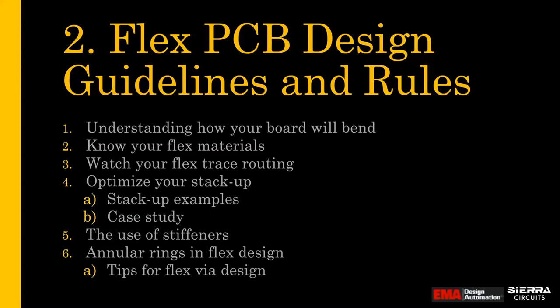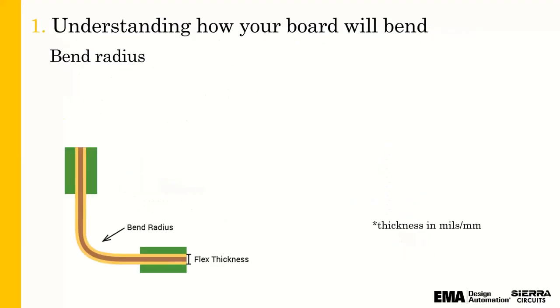Key points for a good understanding of FLEX include knowing how the board will bend, understanding the materials, and how you route — which Janine will cover later. Bend radius is super important. It's the minimum amount of bend you can deal with, so you need to understand how many copper layers you have in your FLEX region that will bend. You should be able to calculate your bend radius; IPC 2223 specifies the standards for bend radius. For a multi-layer FLEX board, or at least the FLEX section of a rigid FLEX board, you need to consider the FLEX thickness times approximately 15 as your minimum bend radius.